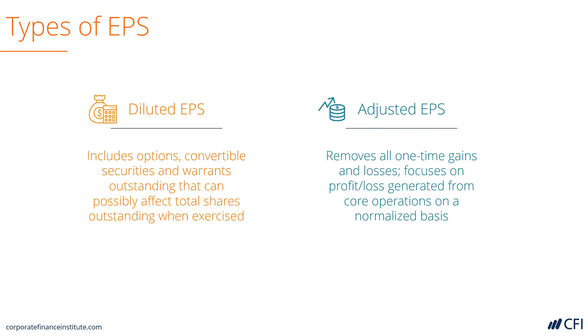Additionally, we can calculate adjusted EPS. This removes any one-time gains or losses and focuses on the core operations of the business, and is hence a normalized or adjusted earnings per share.